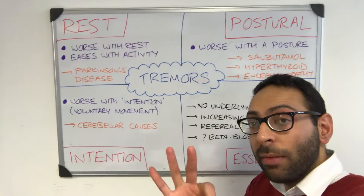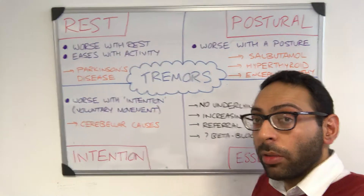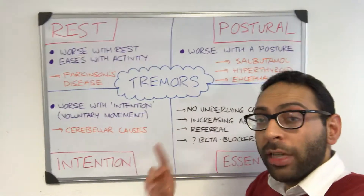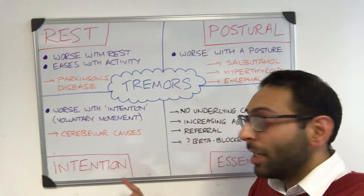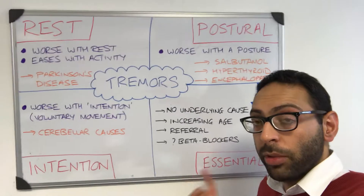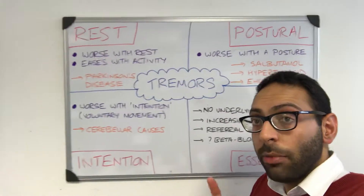There are three main types and one additional we'll talk about. You've got rest tremors, postural tremors, intention tremors, and benign essential tremor, which we'll come into in a second.